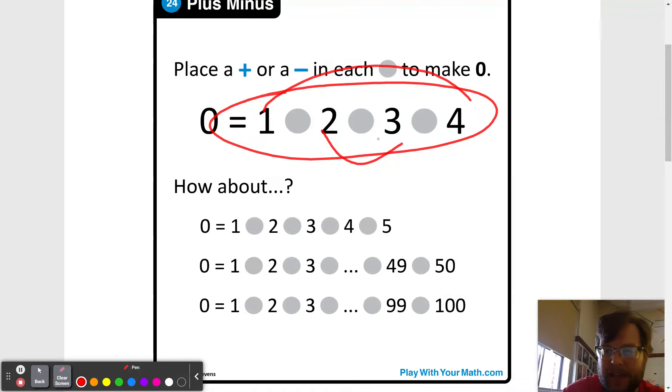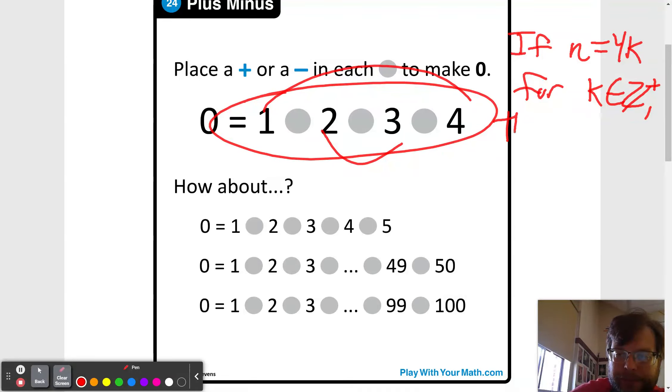So the first conjecture we looked at is that if n is equal to 4k, 4k in Z plus, then you can make zero.